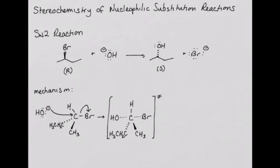This causes the molecule to flip, similar to an umbrella in the wind. This is what causes inversion of the configuration at the chiral center.